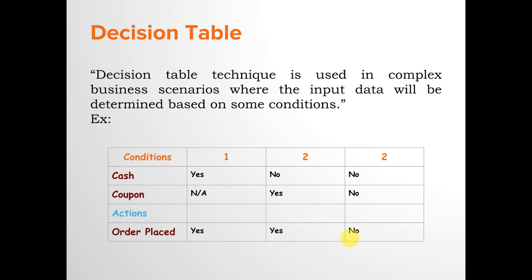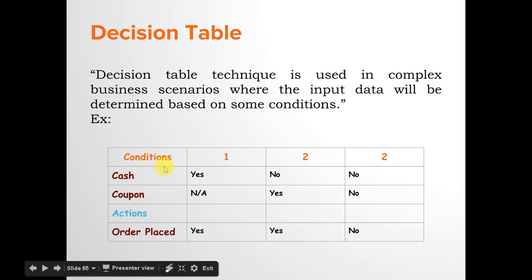Decision table technique is used in complex business scenarios where the output is determined based on conditions. If you have worked with any programming language, you've implemented conditional logic like if-conditions: if a condition is true, one action is taken; if false, another action is taken. The same technique is applied in testing via decision table. Here we have three conditions, and based on those conditions some action will be taken.